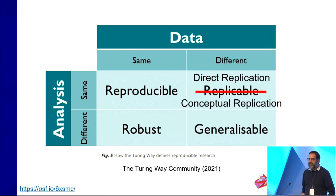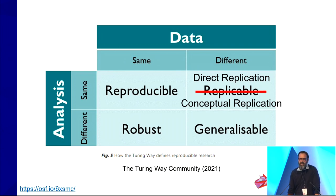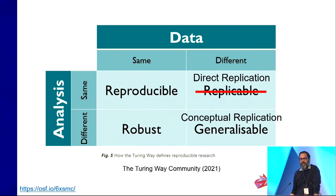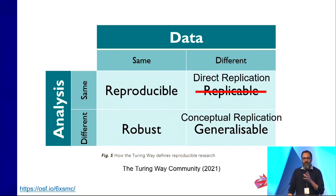As Beth just discussed, there are actually multiple forms of replication — direct or conceptual, as well as additional ones. It's unclear what the distinction is between conceptual replications and generalizability, as both are meant to expand out the context of the original target study. This leads to a lot of squabbles about what kind of replication it is in any particular target.